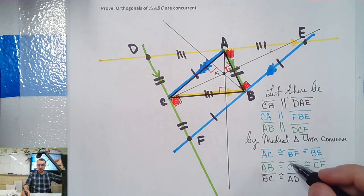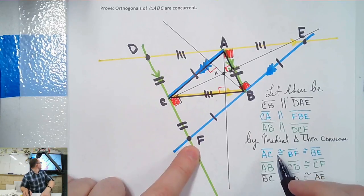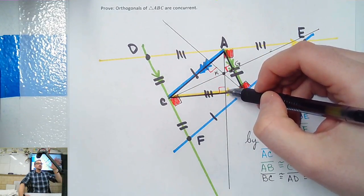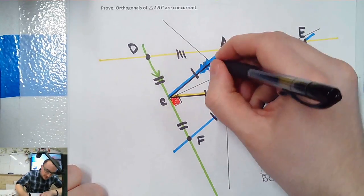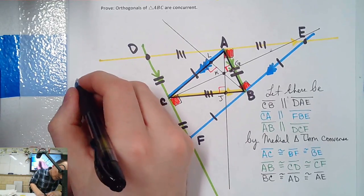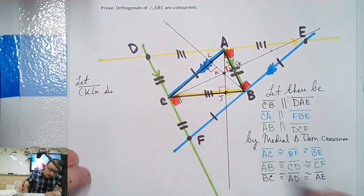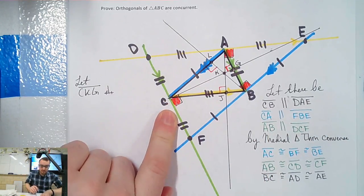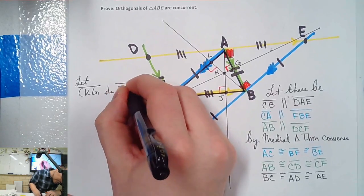Let's call things things. C, K, and then the point where it intersects on the other side — I'll call that G. For this one: A, K, next letter J — I skip H and I because they look weird on their sides. And then this one is B, K, L. So now I'm going to write: let C, K, G be the perpendicular bisector of DCF. Let A, K, J be the perpendicular bisector of DAE. Let B, K, L be the perpendicular bisector of FBE.